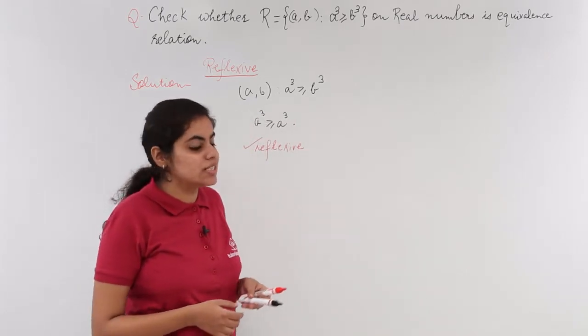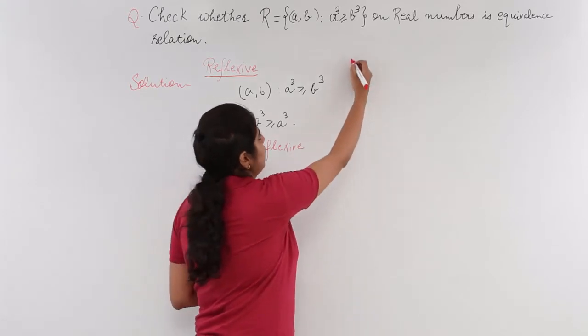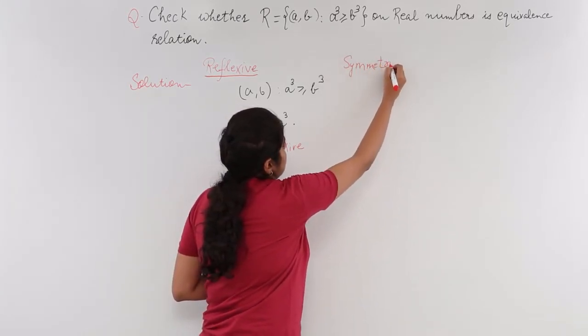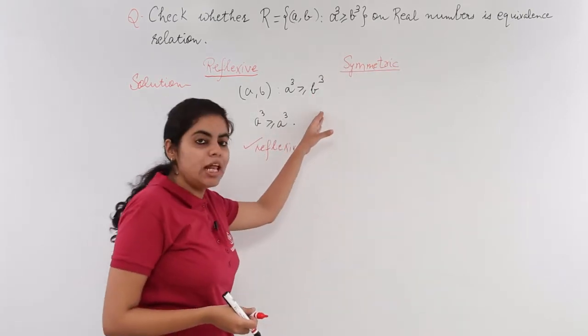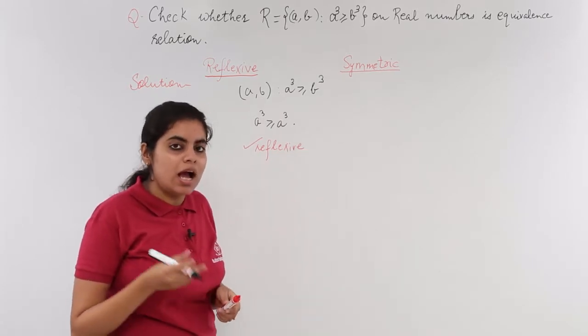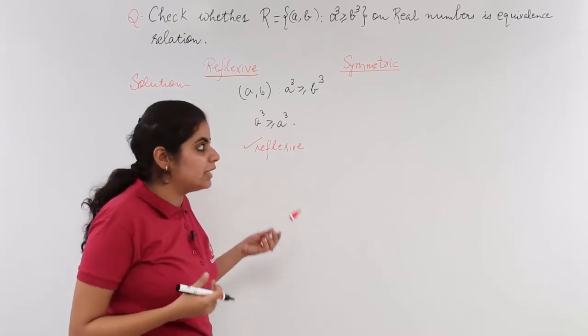Let's see whether this relation is symmetric. I'll write the heading symmetric. We can check with examples or use a generalized approach. I prefer working with examples as it's easier to understand.